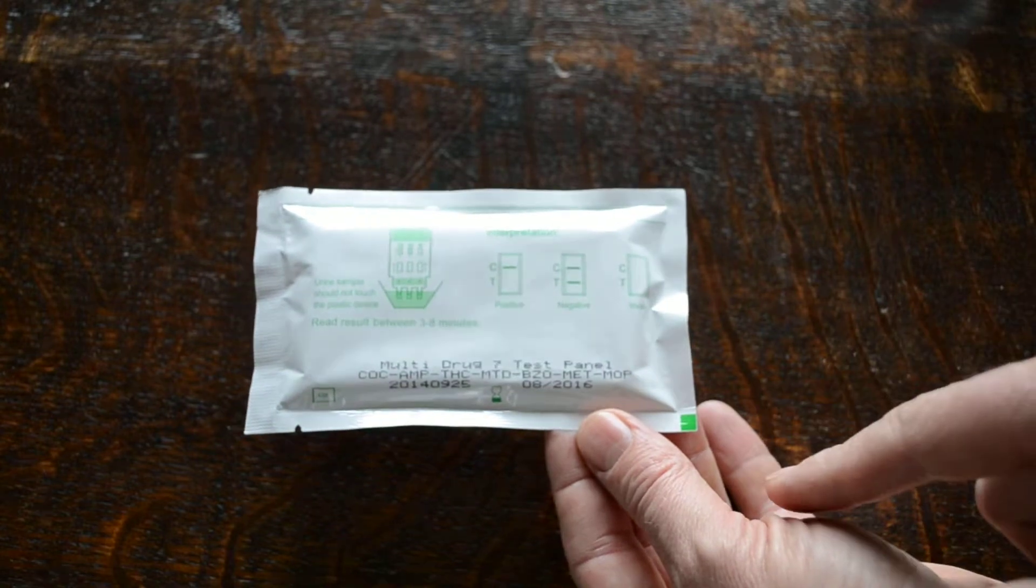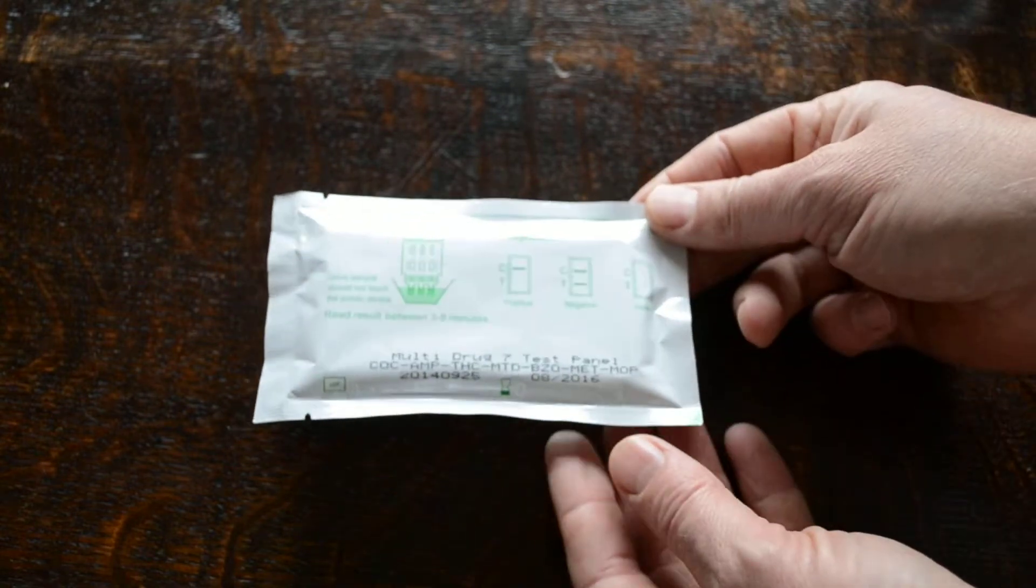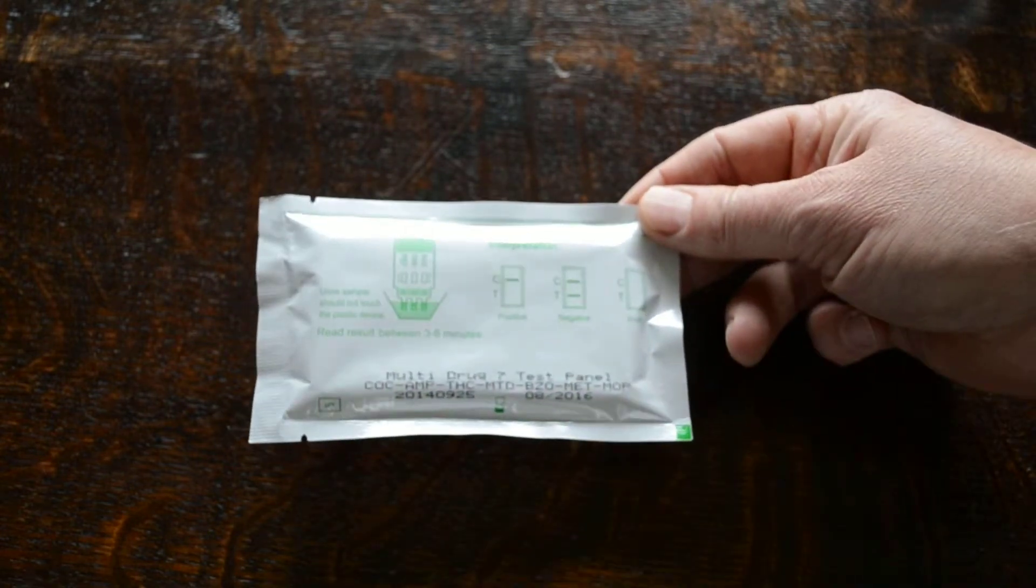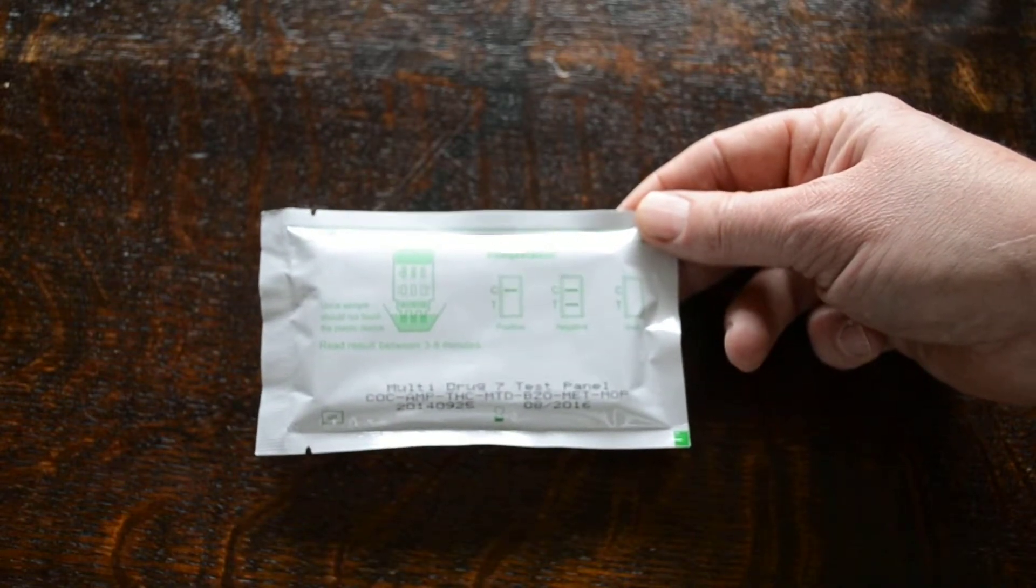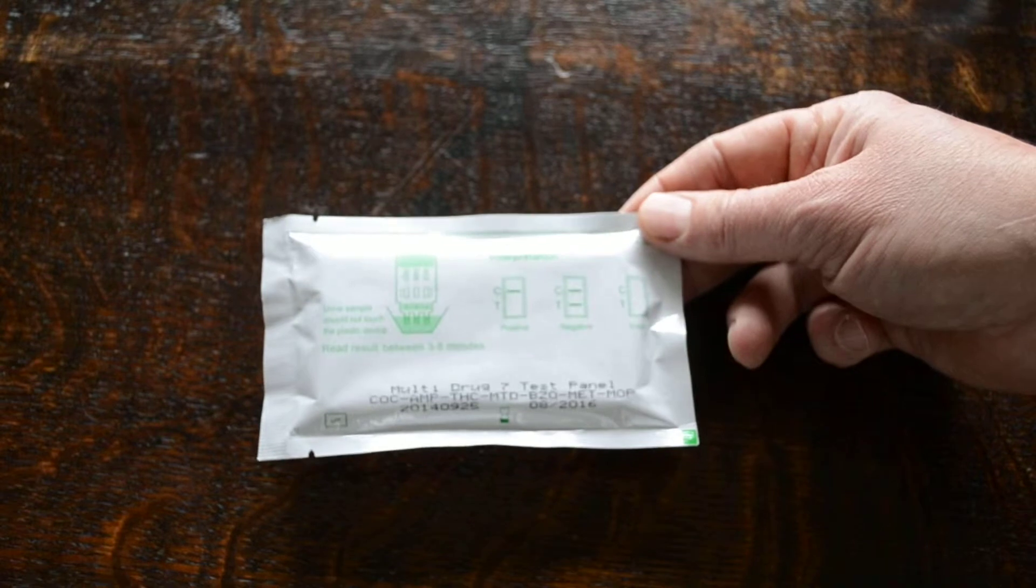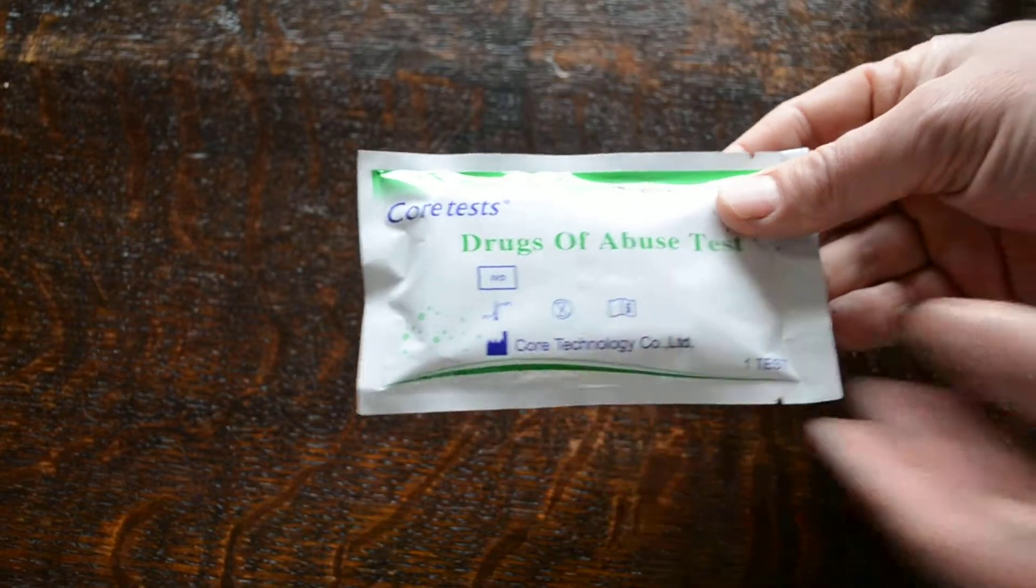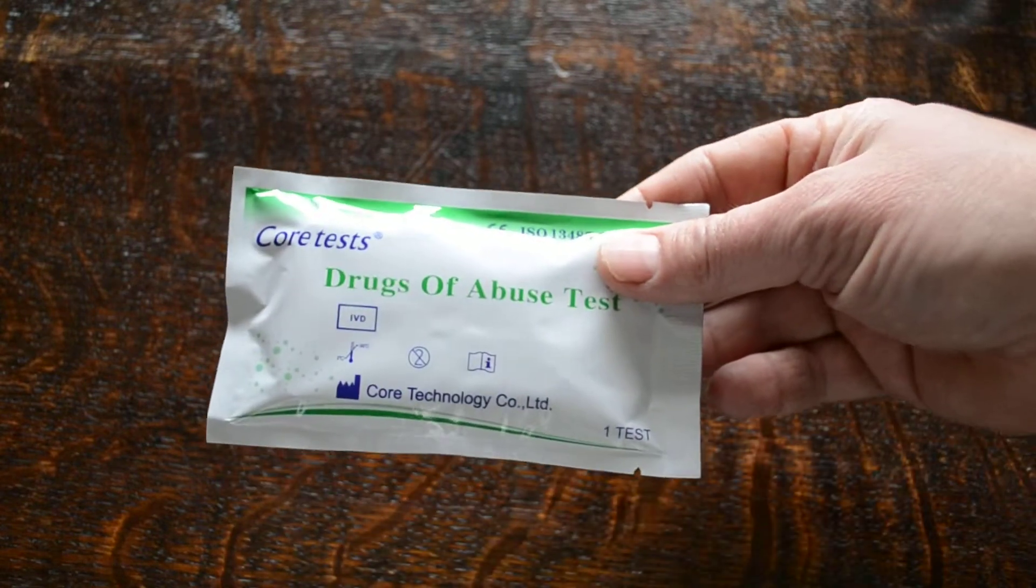Also gives you inkjet printed on here the combination of tests. This particular combo screens for cocaine, amphetamine, cannabis, methadone, benzodiazepines, methamphetamine, and opiates. You'll also have a lot number and an expiry date, so it's nice and easy to check what you've got before you run the test.